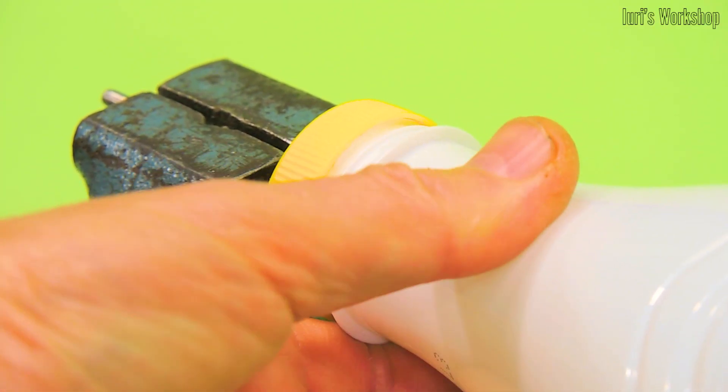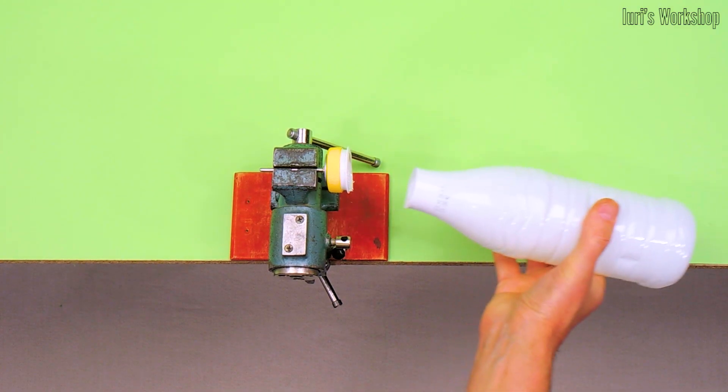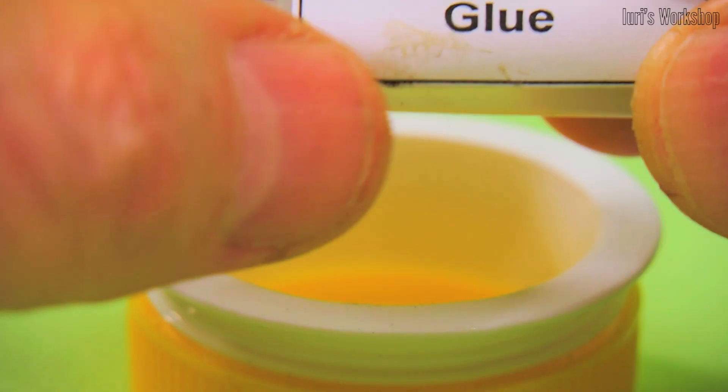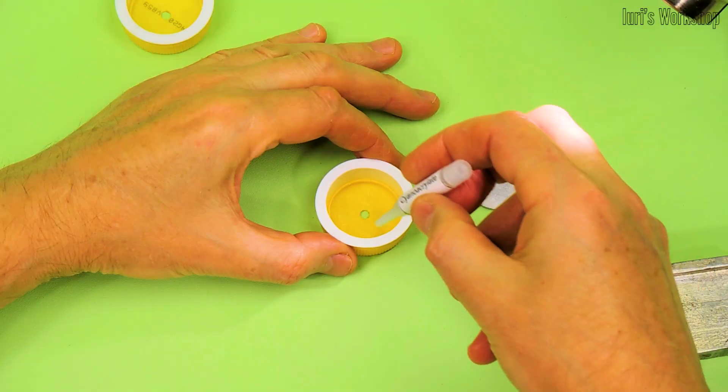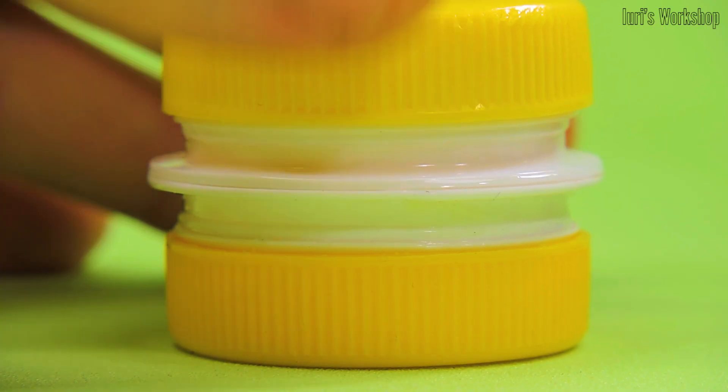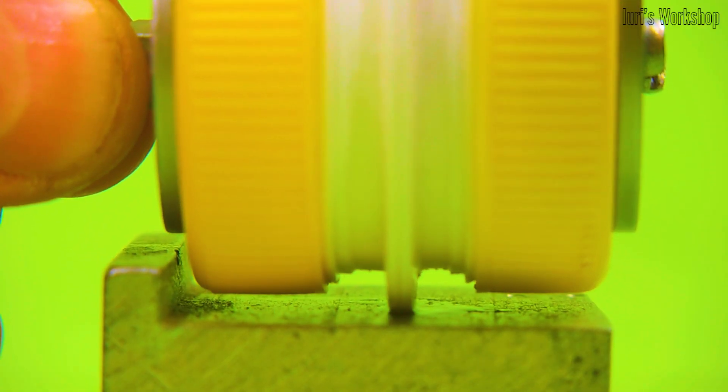To make the cartridge bodies, I first cut off the threaded parts from the plastic milk bottles. Then I sanded the ends of the blanks and glued them with cyanoacrylate glue. During the curing of the glue, I placed the blanks under the press.